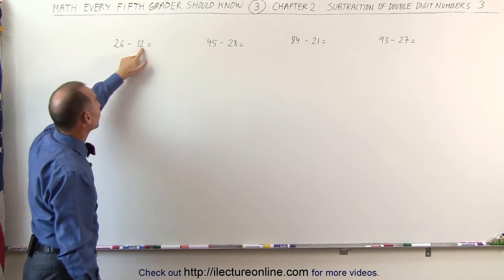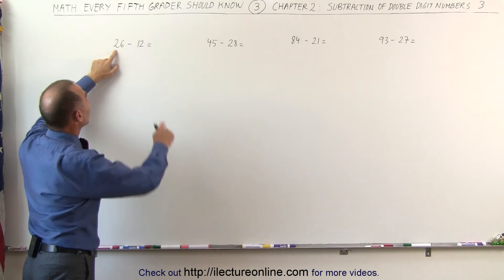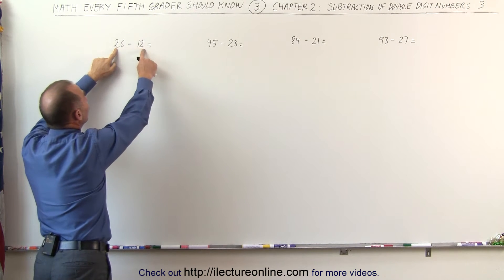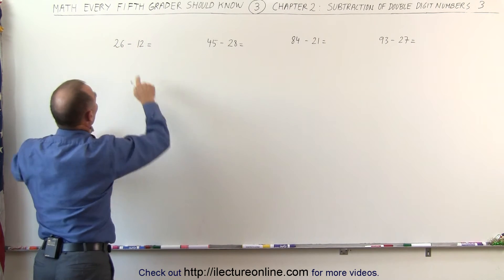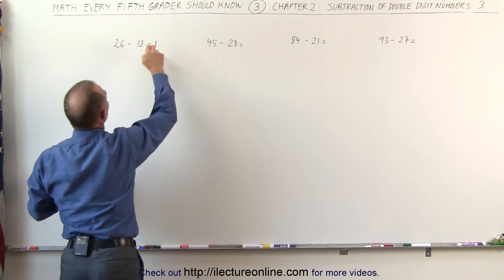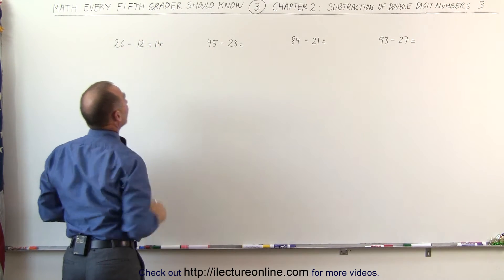Start with this number. If it's smaller than that and this number is smaller than that, you simply subtract the 1 from the 2 and the 2 from the 6. 1 subtract from 2 gives me 1, 2 subtract from 6 gives me 4 and the answer is 14.